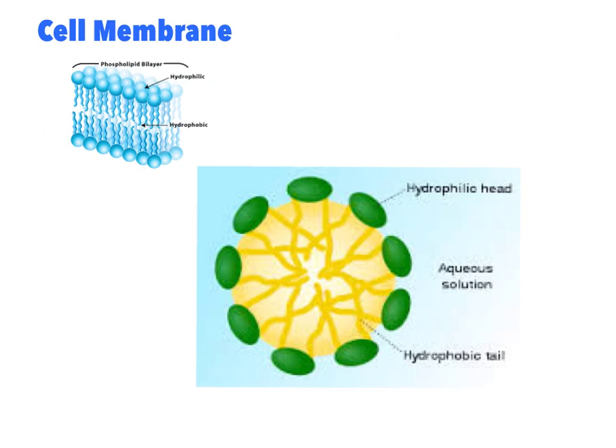Another place we see phospholipids is in soap. The phosphate comes from wood ash and the lipid tails usually come from animal or plant fats. When you use soap, the hydrophilic heads go toward the water while the hydrophobic tails surround oil and dirt particles on your skin. When you rinse off, everything goes down the drain. If you've ever pulled a clog from a sink, that's why it's so greasy — it's fat molecules from both the soap and your body clumping together.